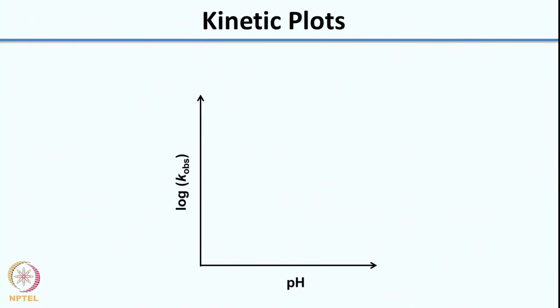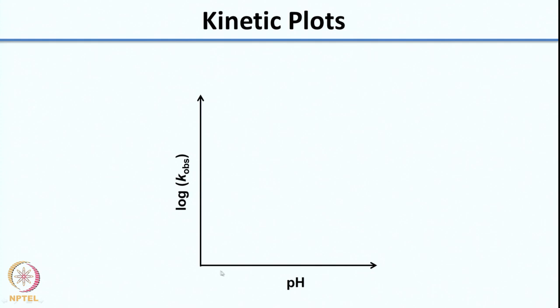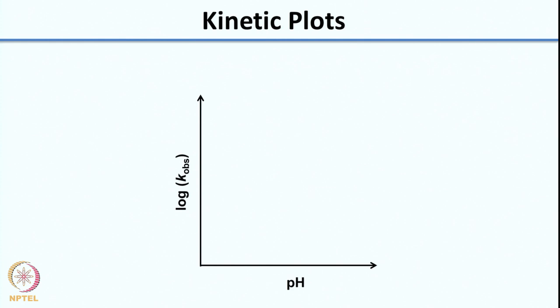If you have a situation with dependence on both HA and B, what will the plot of log K observed versus pH look like? We have already seen what the plot looks like for a general acid and a general base separately. When you have both together, the plot will look like a mix of the two — it will be a bell-shaped plot, a hybrid of both.